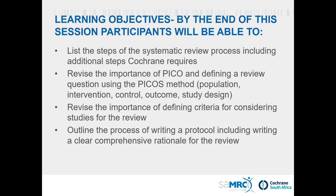In this session we'll cover points two to eight in more depth. The learning objectives include listing the steps of a systematic review process including additional steps Cochrane requires, revising the importance of PICO and defining a review question, and outlining the process of writing a protocol, including writing a clear comprehensive rationale.